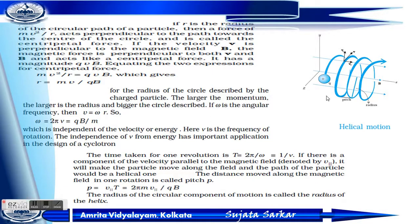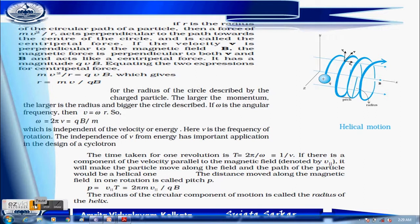Here omega is the angular frequency. Since V is equivalent to omega×R, we can substitute to get omega = QB/M. This is also written as 2πν = QB/M. This is independent of the velocity or energy of the particle.